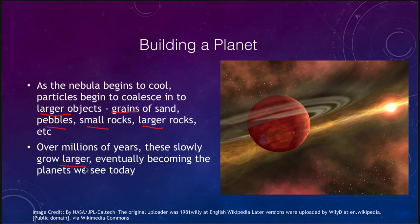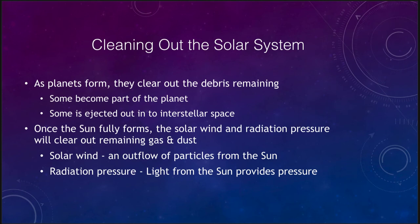Over billions of years, these planetesimals slowly grew larger, eventually becoming the planets we see today. One planetesimal would become dominant in each area, clean out that part of the nebula, collect a lot of material, and use its gravity to throw material out of the solar system altogether. As the planets formed, some leftover debris was gravitationally pulled in, impacting and causing the planet to grow.